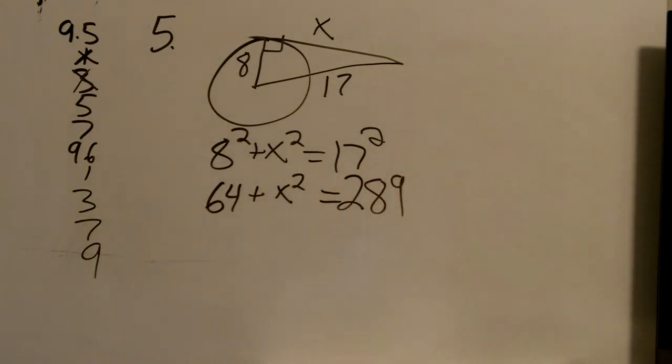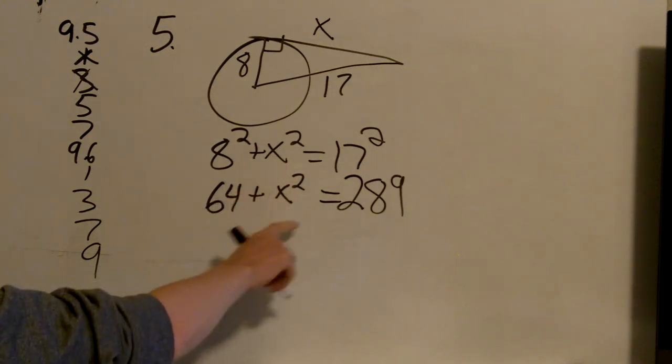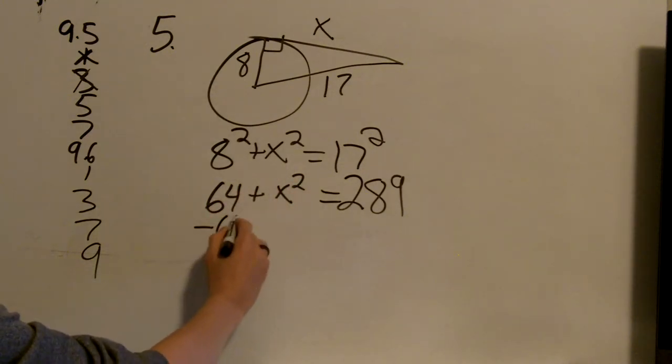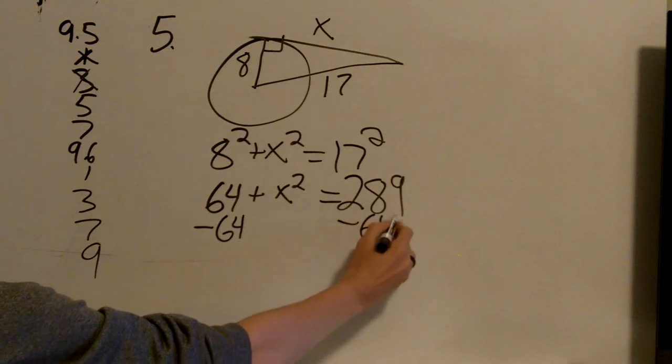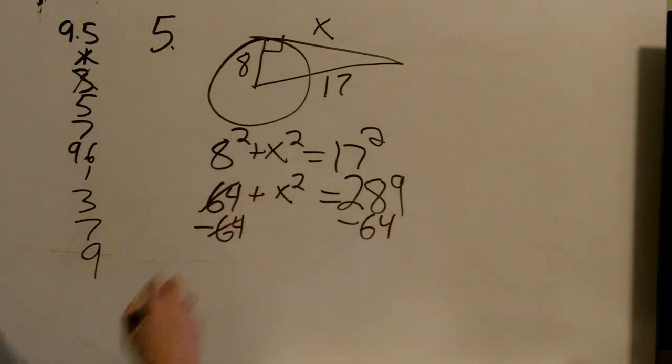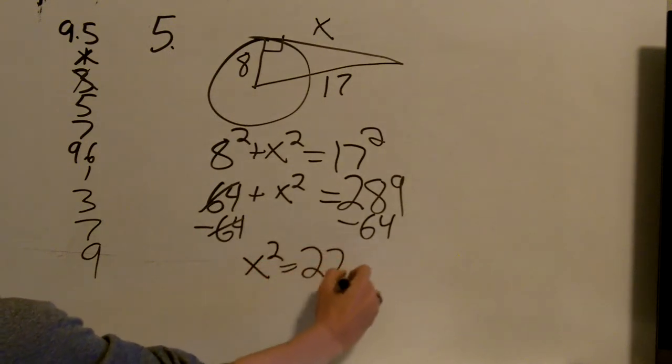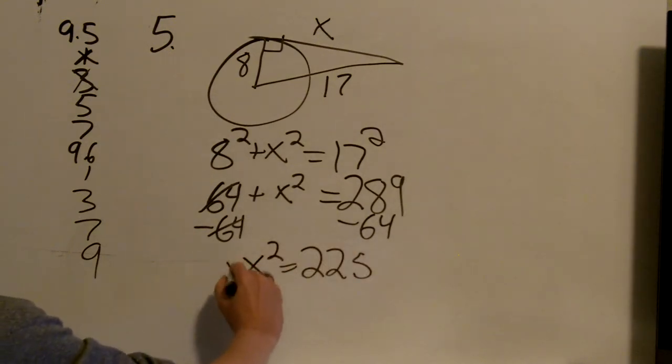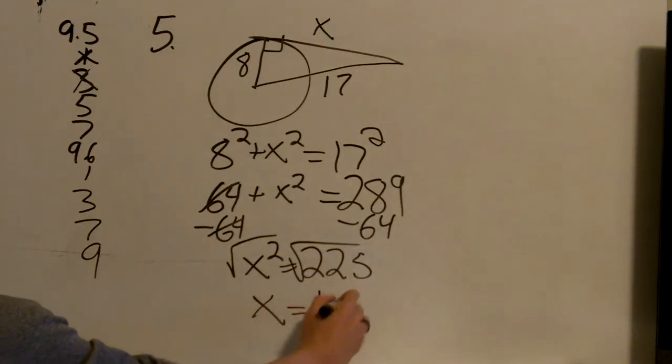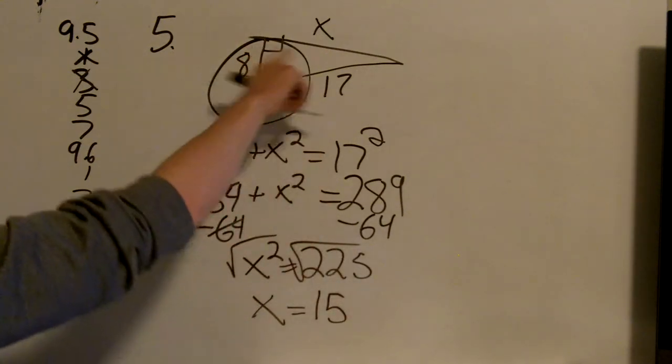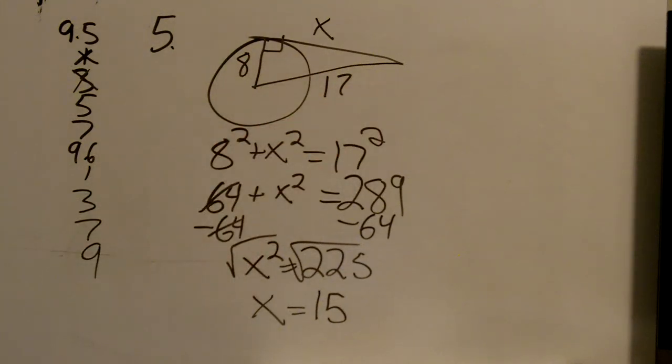Now, I want to get this x squared by itself. So I subtract 64 from both sides. It goes away. I have 289 minus 64. Gives me x squared equals 225. And then I take the square root of both. And I get x equals 15. That means that that missing side is 15 long.